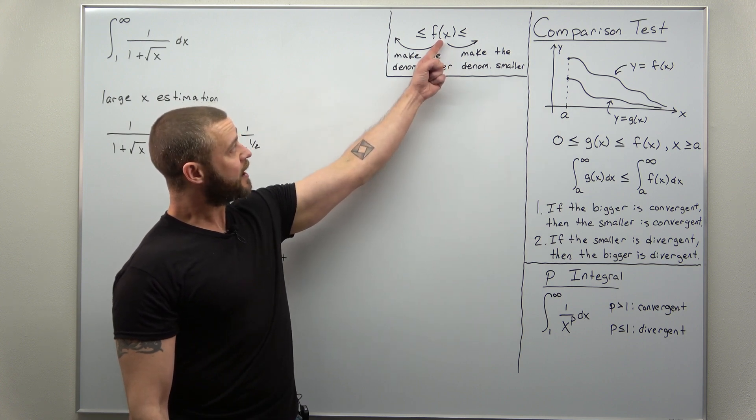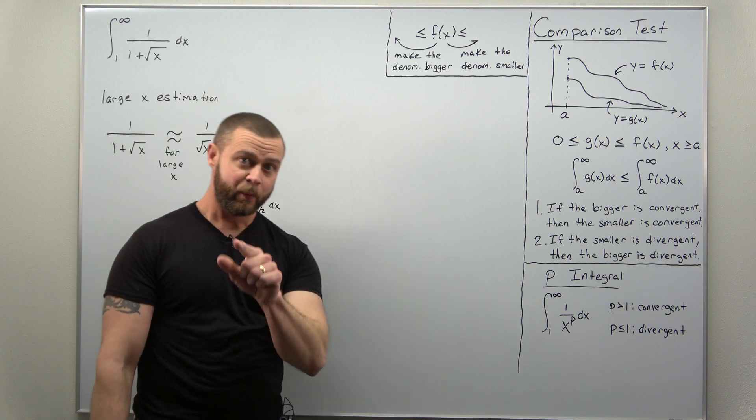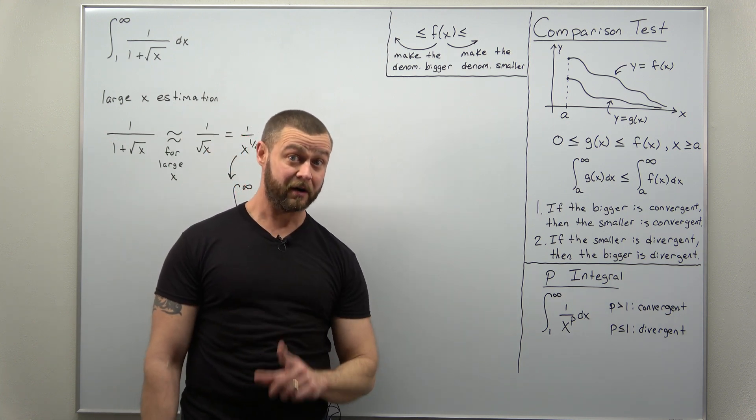If we think of our function here in the middle, we want to find something smaller. We can do that by making the denominator bigger.